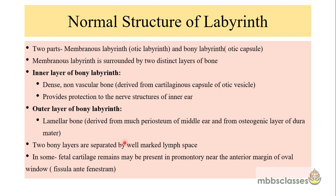Otosclerosis is a disease of the bony labyrinth or otic capsule. Before we go into the disease proper, let us review the normal structure of the labyrinth. The labyrinth is composed of two parts: the membranous labyrinth, also called the otic labyrinth, and the bony labyrinth, which is the otic capsule. The membranous labyrinth consists of the utricle, saccule, cochlea, semicircular canals, and endolymphatic duct and sac, and it contains endolymph. The membranous labyrinth is surrounded by the bony labyrinth.